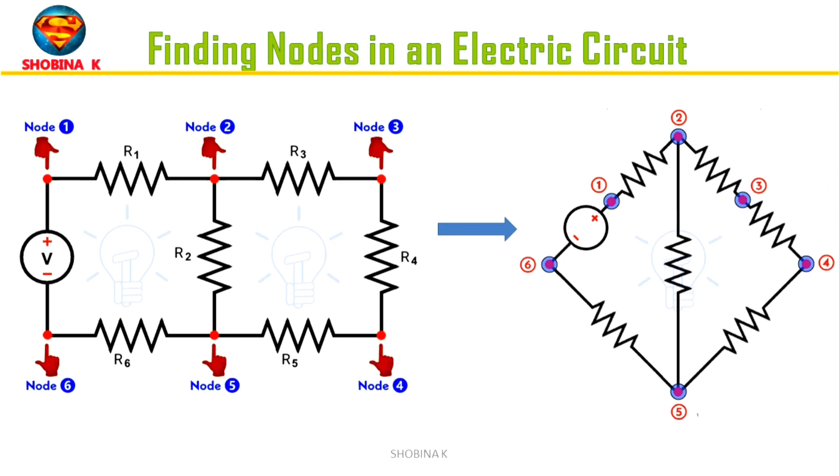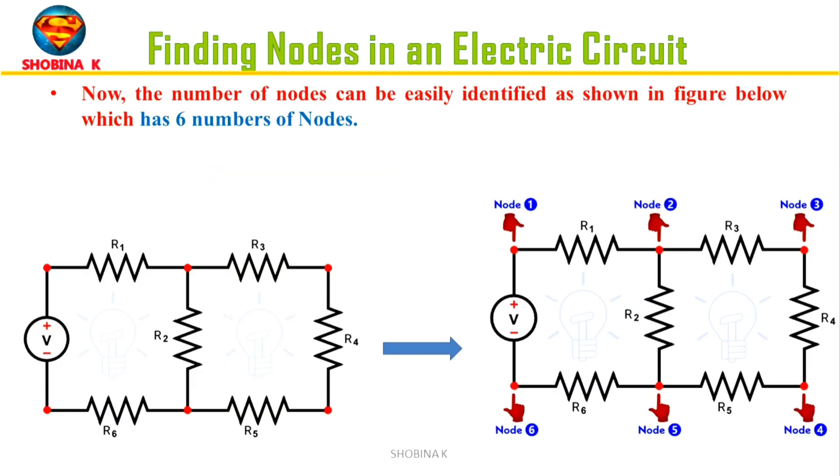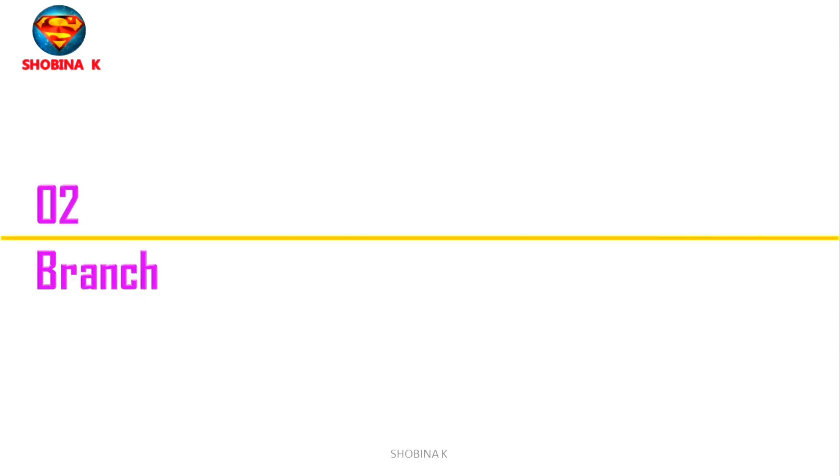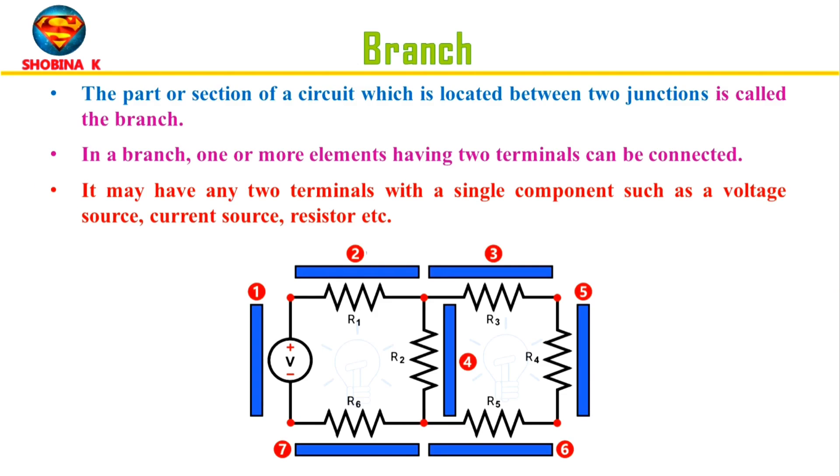Now the number of nodes can be easily identified from the figure, which has six number of nodes. So after redrawing the circuit, the number of nodes can be easily identified.